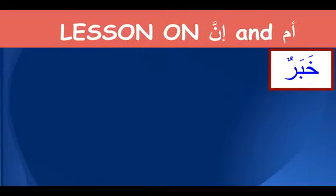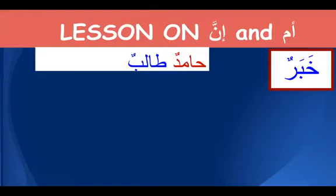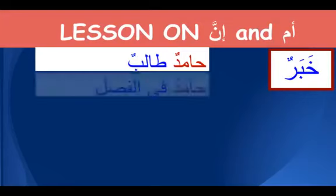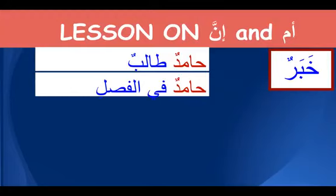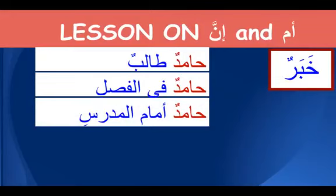Remind yourself that there are five kinds of khabar. For example, if I say Hamidun talibun, Hamidun is mubtada and talibun is khabar — one word, indefinite and marfoo. If I say Hamidun filfasli, filfasli is jar majrur shibhu jumla khabar — a fragment. And Hamidun amam al-mudarrisi — amam al-mudarrisi is zarf mudafilahi, another type of khabar fragment.